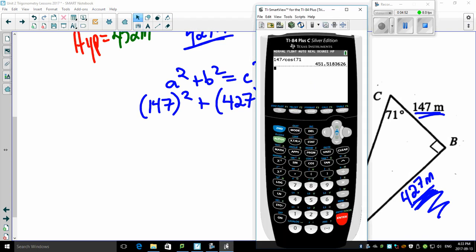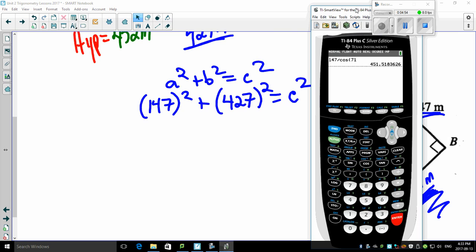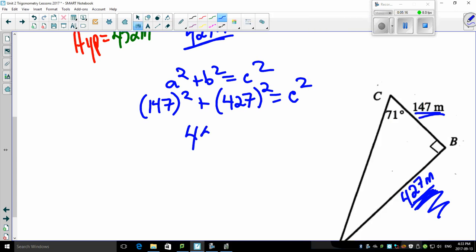You just have to solve for c squared. So, bring up your calculator. 147 squared plus 427 squared gives you that value. And don't forget, you have to inverse square it or square root it. Second answer. And you get a value of 451.5, which is 452, 452 meters.